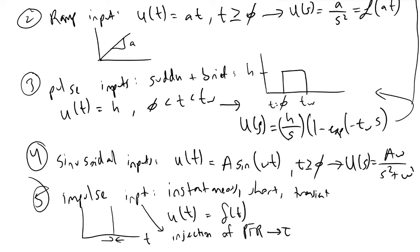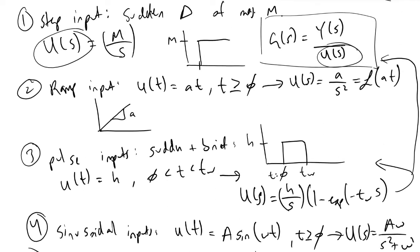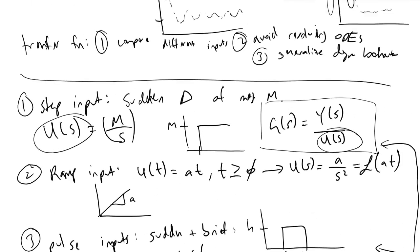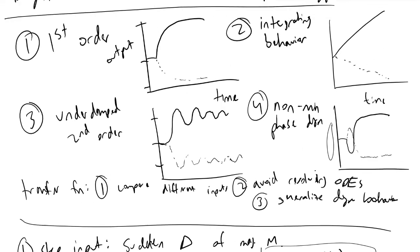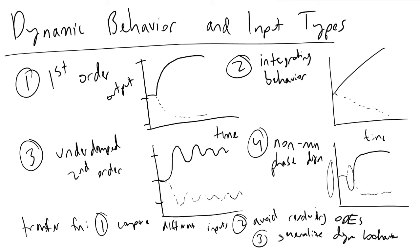If we take the Laplace transform of a Dirac delta function, this tells us that the frequency domain of an impulse input is just the number one. This concludes the different types of inputs we can have in our models that we use in process control, our dynamic behavior, as well as the different types of dynamic behavior we can observe. I hope you guys find this useful. Let me know if you have any questions. Thanks for watching.